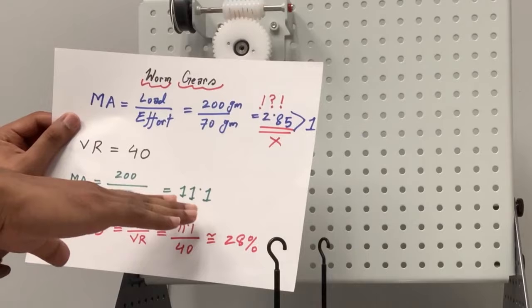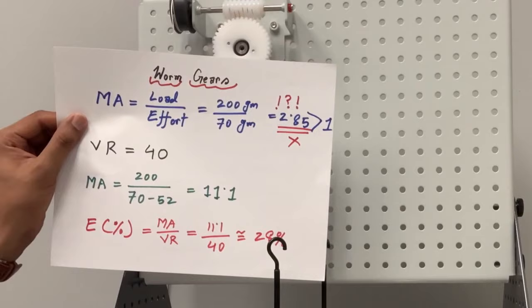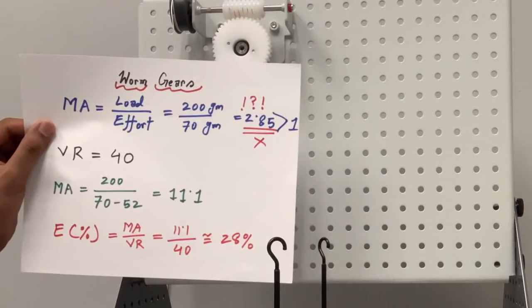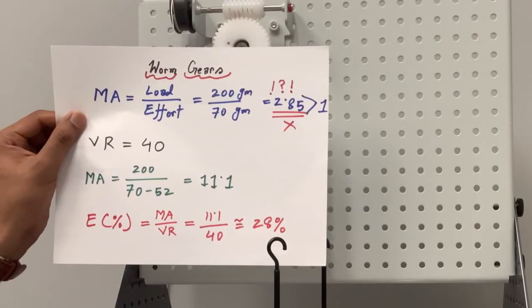So this is our revised calculation. We reject the mechanical advantage which was 2.85. We recalculated deducting the friction effort. Now our mechanical advantage is 11.1, and if we use the velocity ratio of 40, now our efficiency is 28 percent, which is still low for a worm gear. Normally for a one-start you should get 50 percent or 60, 70 percent efficiency.